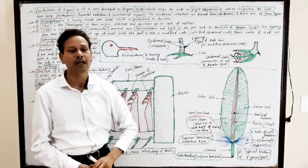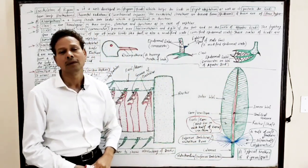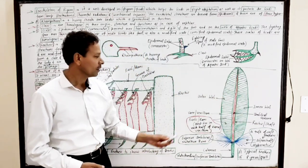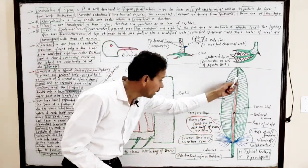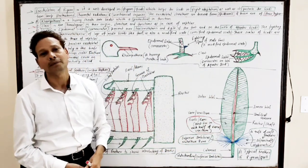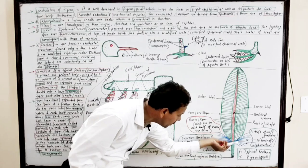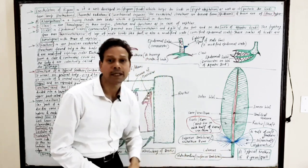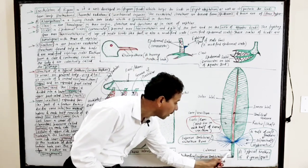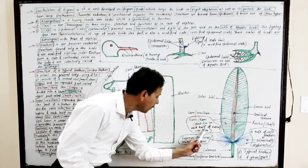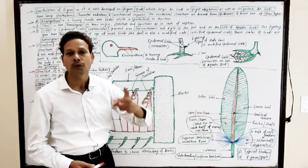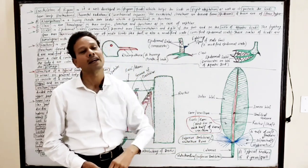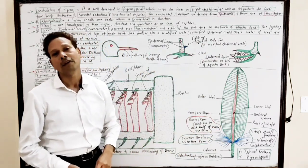A feather consists of two parts: the central axis, which is the scapus, and the expanded fan-like structure, which is the vagillum. The scapus is divided into two parts. The lower basal part is the calamus, and the calamus has two openings or pores: one is the inferior umbilicus and the second aperture is the superior umbilicus. Through these pores — the inferior and superior umbilicus — nutrients are supplied to the developing feather.